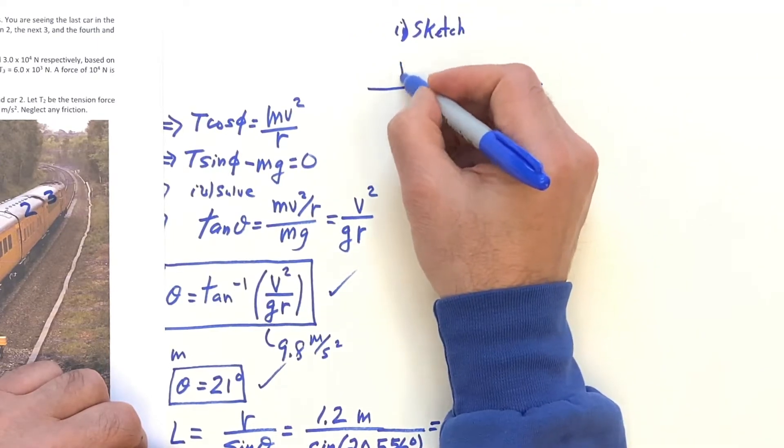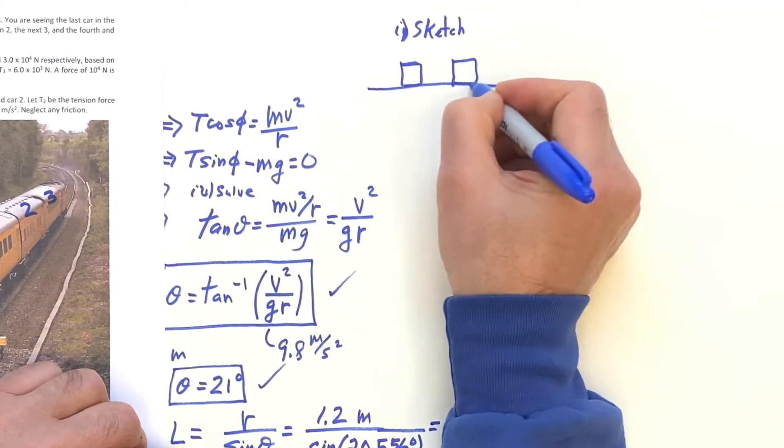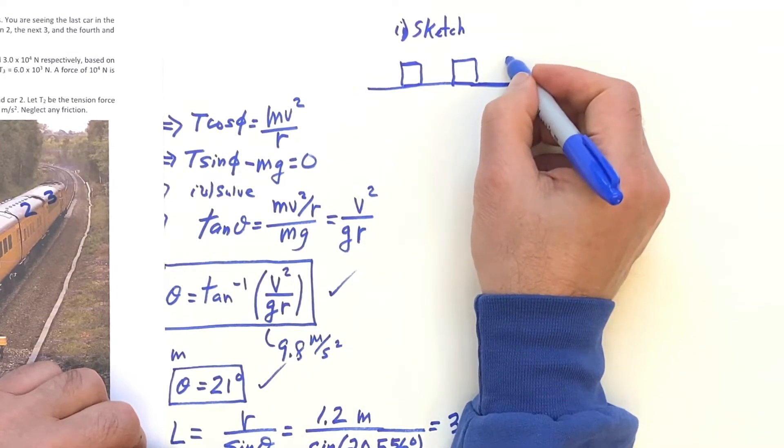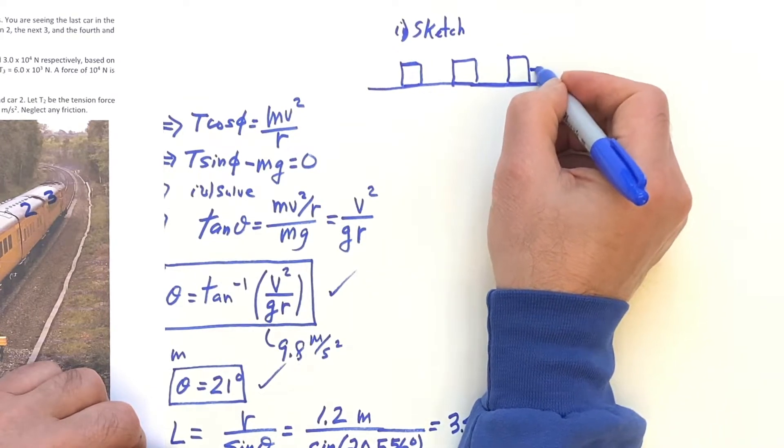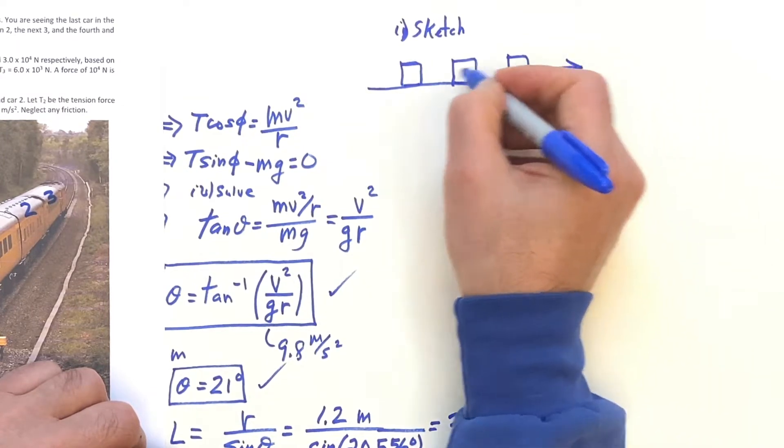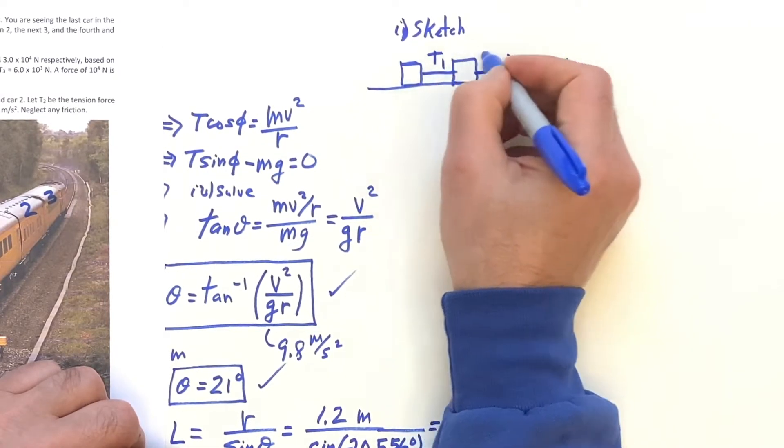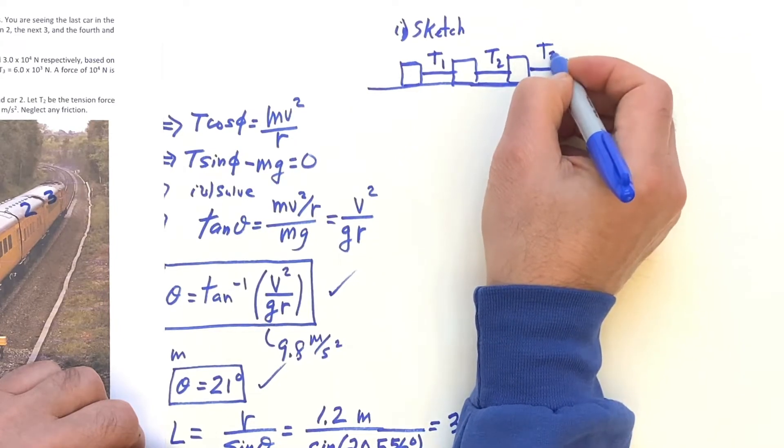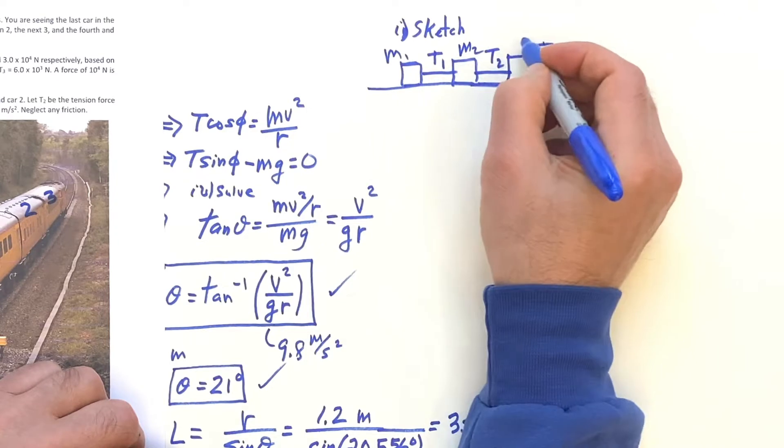We have here mass one, mass two, and mass three, and then the lead car is actually pulling to the right. And it's said to label these T1, T2, T3, and this is M1, M2, M3.